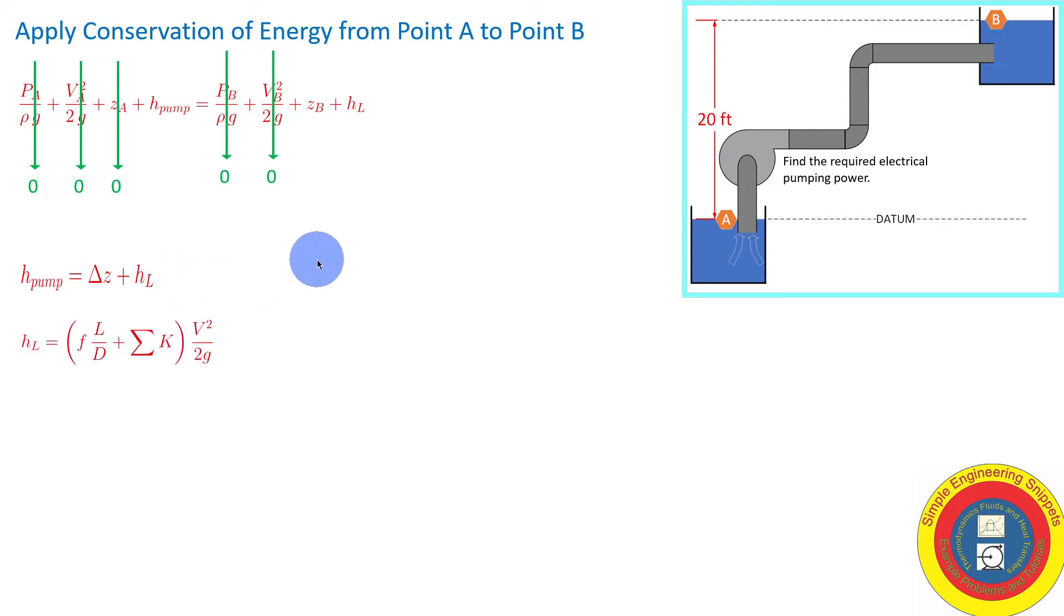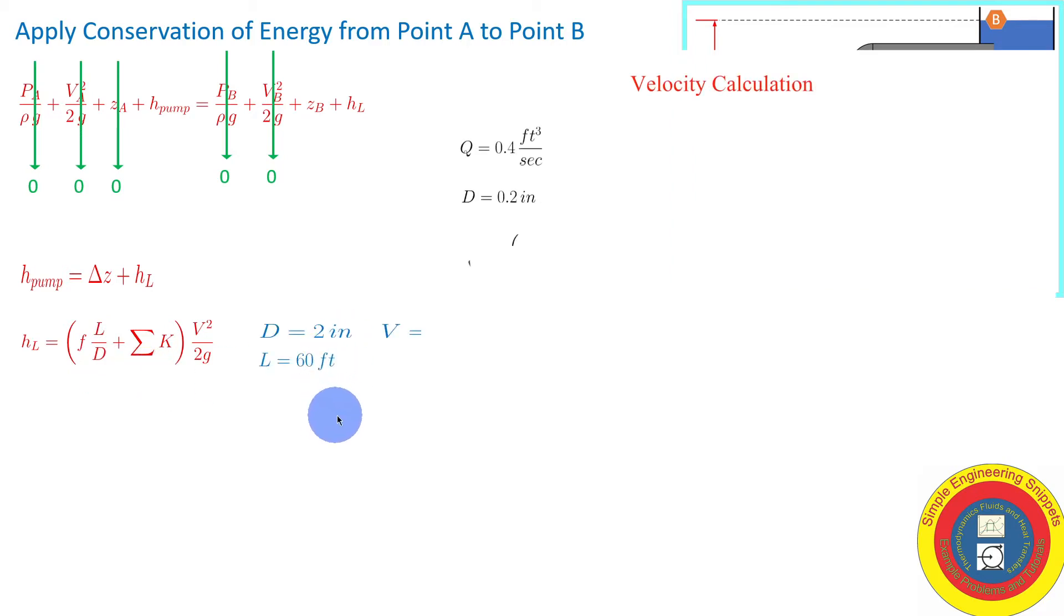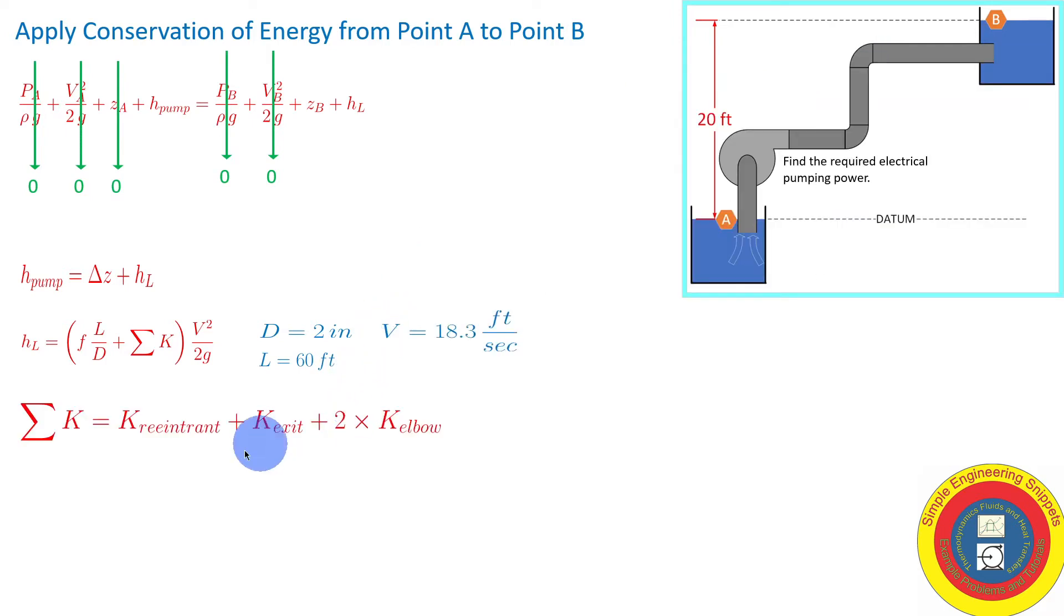We'll be using Darcy-Weissbeck equation. We know the length, we know the diameter. We can calculate the velocity. The details are shown. The minor losses are all provided for us. They're equal to 2.98. So we need to find the friction factor.